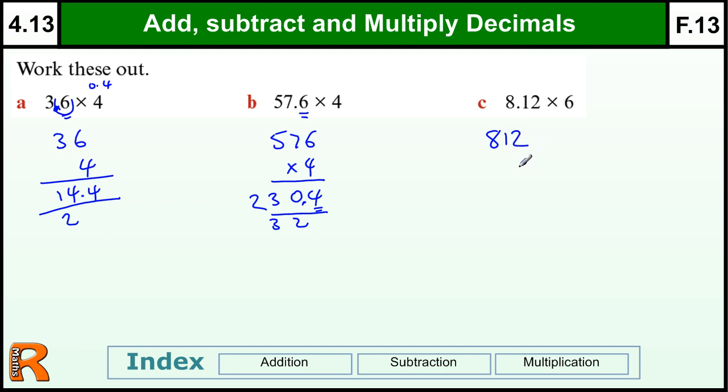And one more to finish with, 812 times by six, six twos, twelve, carry one, six times one is six plus one is seven, six eighths of forty-eight, and then this time we've got one two decimal places in the question, so we need one, two decimal places in the answer, so it's going to be 48.72.